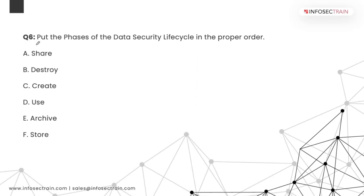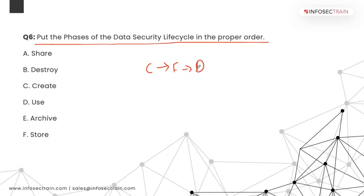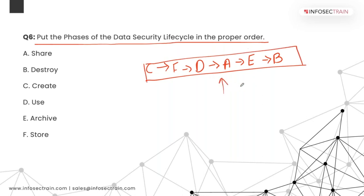Question 6: Put the phases of the data security lifecycle in proper order. The correct sequence is: C — Create, F — Store, D — Use, A — Share, E — Archive, B — Destroy. This is the sequence defined in the CCSK security guidance.